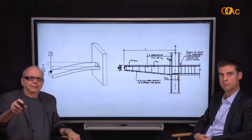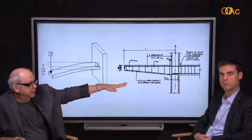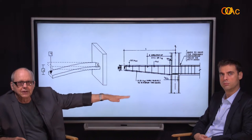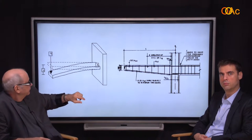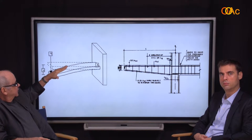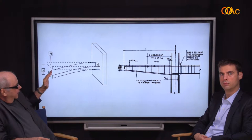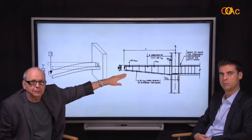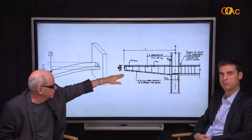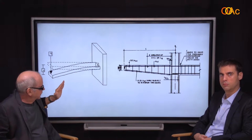A cantilever is like your arms sticking out — it has support at the shoulder, and the rest is just hanging out there. In concrete, this deflection gives us tension in the top part. The tension in reinforced concrete is handled by the steel reinforcing bars, so we have steel reinforcing not only on the bottom but on the top.